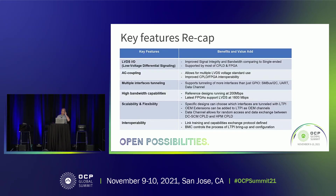These are the key feature recaps — the previous presentation covered the changes in depth. It uses low voltage signaling and AC coupling. Multiple interfaces are tunneled through, not just GPIO. It has much higher bandwidth — the latest FPGA implementation runs at 1,600 megabits. It's scalable and flexible, and at least this portion of it is interoperable. The rest of SCM 2.0 will be similarly interoperable with different vendors appearing on different motherboards.